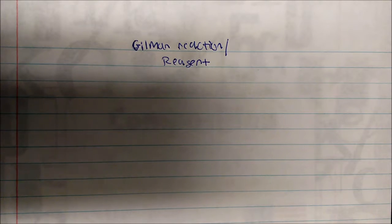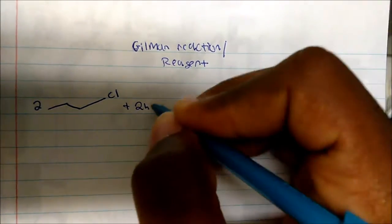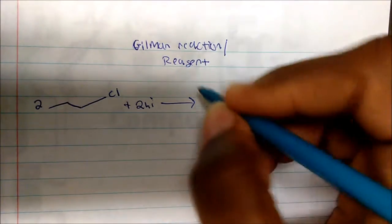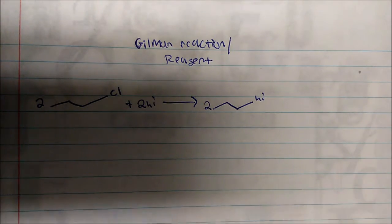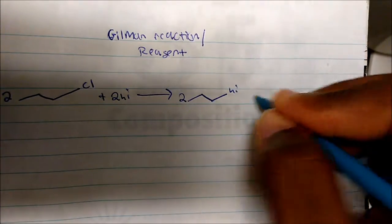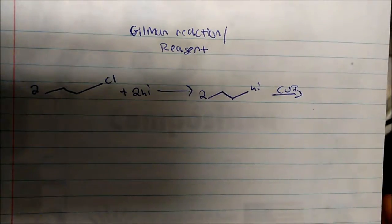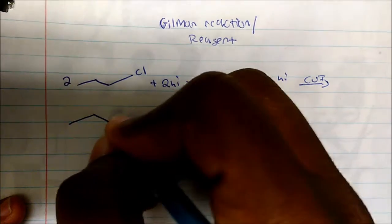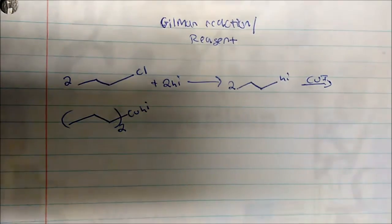Let's talk about the Gilman reaction and reagent. To make the Gilman reagent, we start with an alkyl halide. We take two moles of this compound, react it with two moles of lithium. The lithium displaces the chlorine, giving us two moles of one-propyl lithium. We then treat it with cuprous iodide (CuI), and we get what's called the Gilman reagent, or copper alkyl reagent.